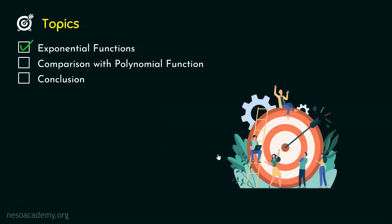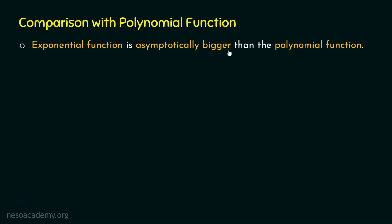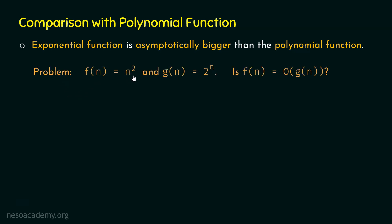Now let us compare exponential functions with polynomial functions. The exponential function is asymptotically bigger than the polynomial function. To understand why, let us solve a simple problem. Let f(n) equal n squared and g(n) equal 2 to the power of n. So f(n) is the polynomial function and g(n) is the exponential function. Is f(n) equal to big O of g(n)? Can we say that the exponential function is asymptotically bigger than the polynomial function?